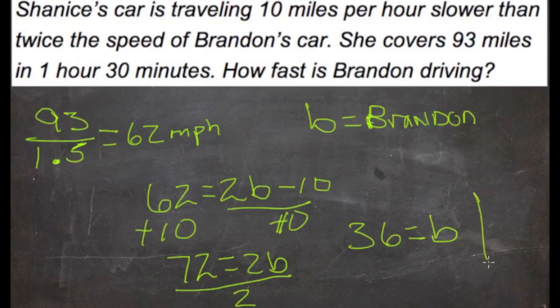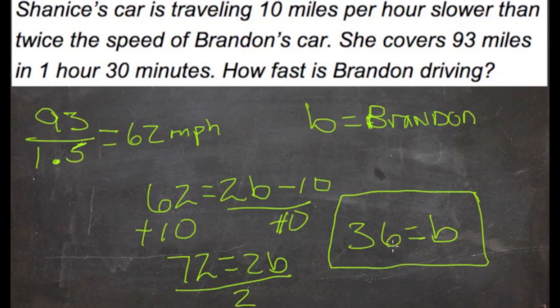So that means that Brandon's speed is 36 miles an hour. And if we did twice that, that would be 72, and 10 slower than that would be 62, and that was Shanice's speed of miles per hour. So our answer is correct.